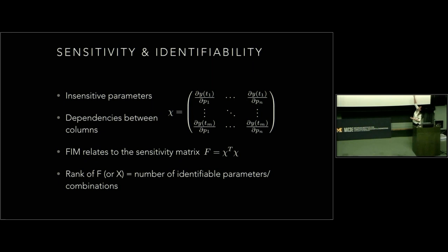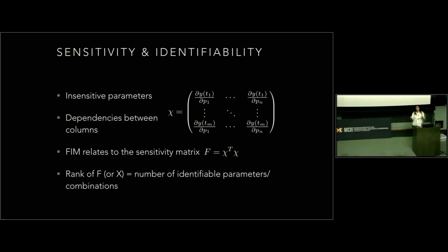What you can do is look at your sensitivity matrix — the Jacobian, also called the design matrix. If two parameters can counterbalance one another, you'd expect to see that as dependencies in the columns. The related Fisher information matrix is used a lot too. You can use the rank of either matrix to determine how many identifiable parameters and identifiable combinations you have. The downside is that it's local — only a local estimate — and when you have many overlapping identifiable combinations it can be hard to disentangle who's doing what.